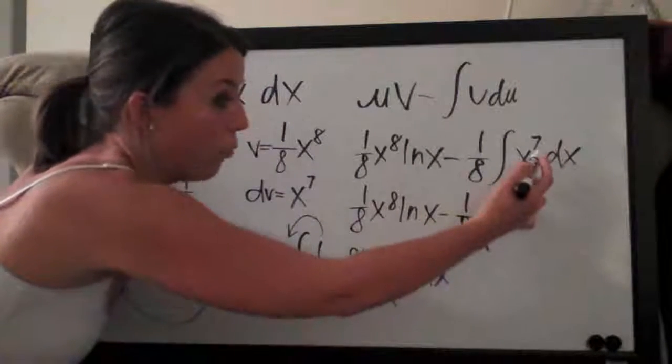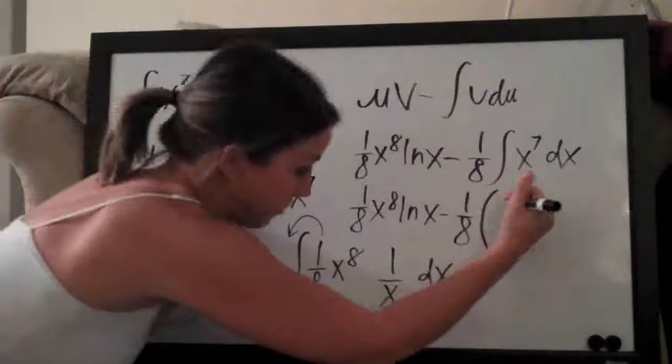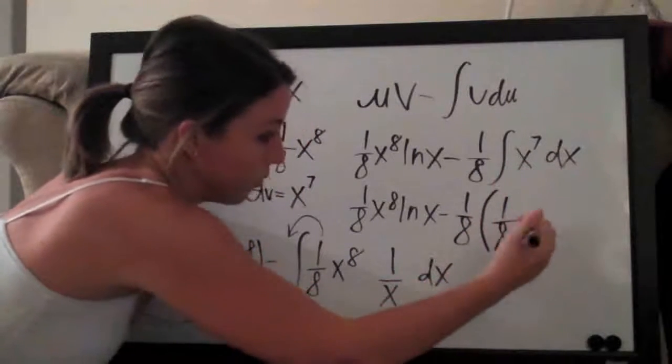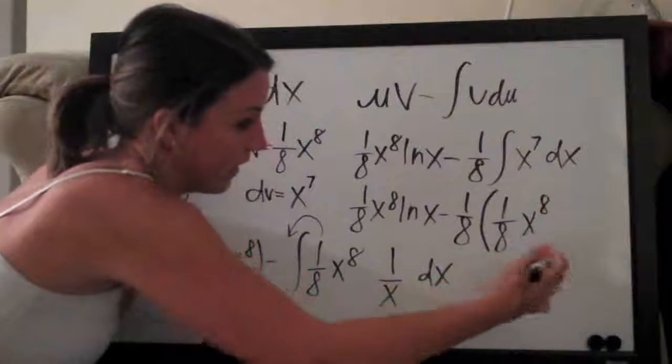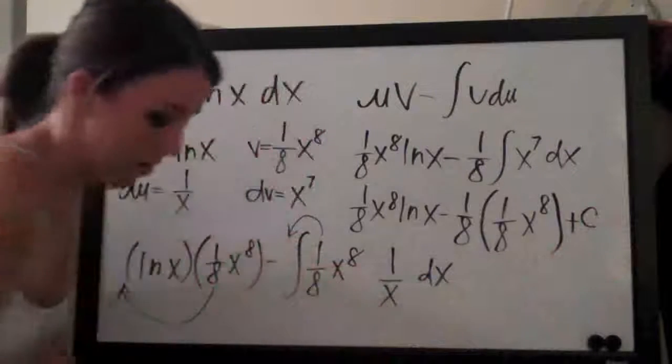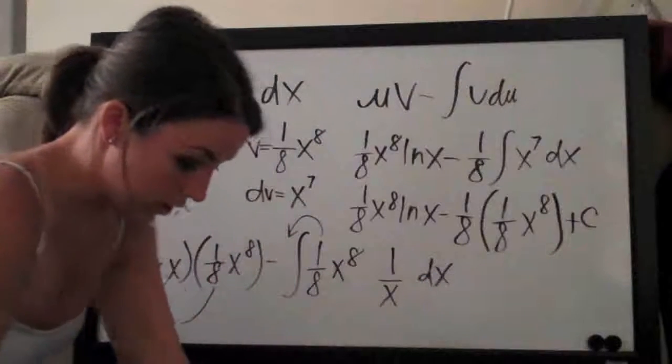So again, with x to the seventh we add one to the exponent and then divide the coefficient one by the new exponent which is of course going to be eight. It's one eighth x to the eighth and then we add c to account for the constant.